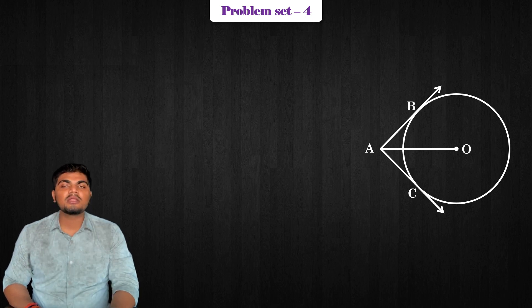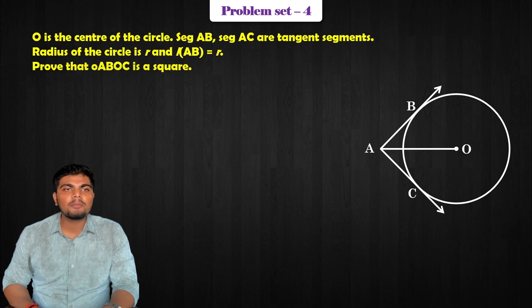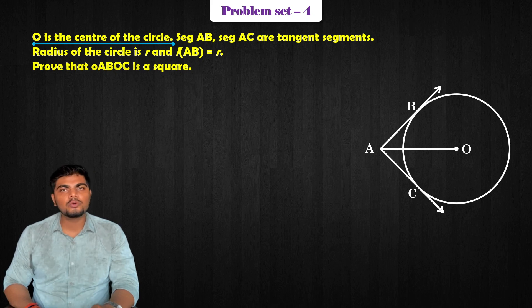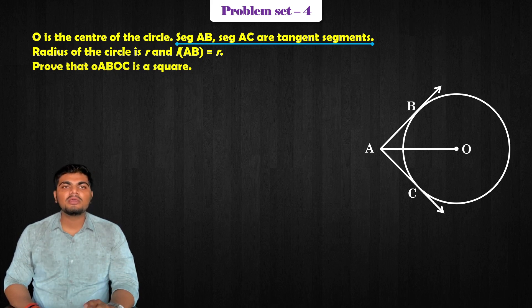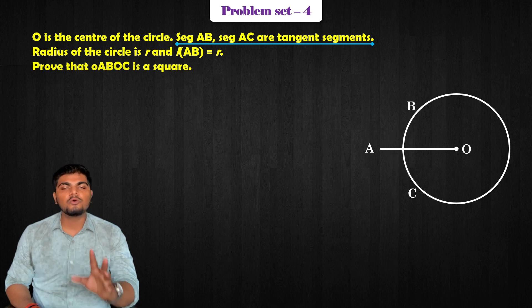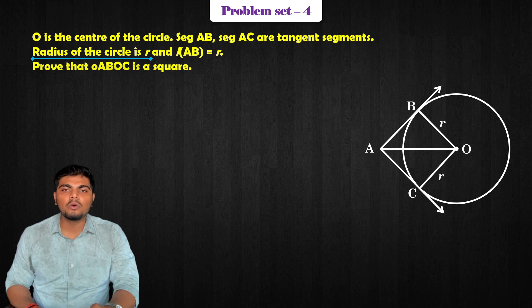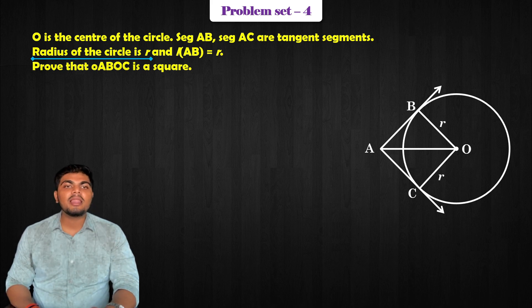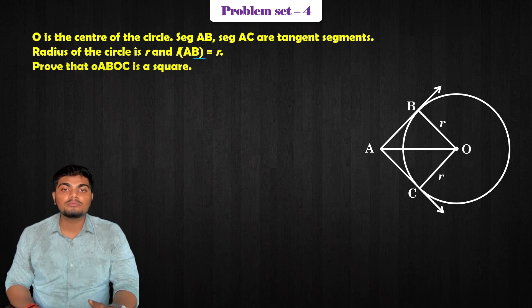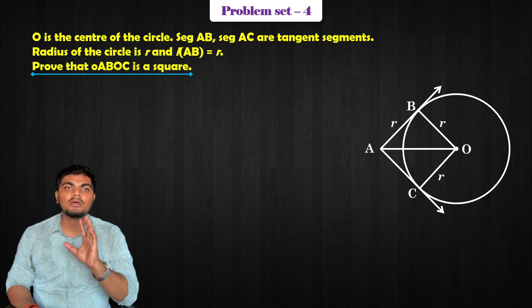Now we do problem set 3, fourth question of the circle chapter. O is the center of a circle. Segment AB and segment AC are the tangents. The radius of the circle is R. Line AB is equal to R.